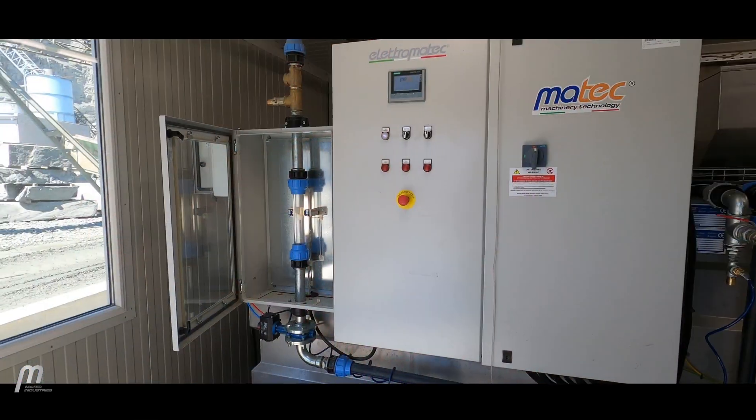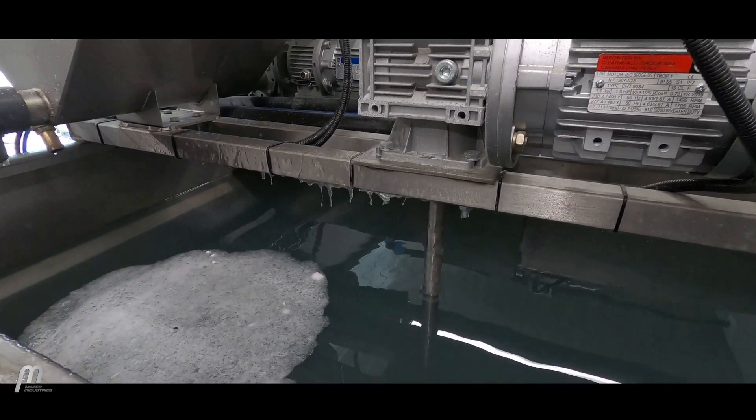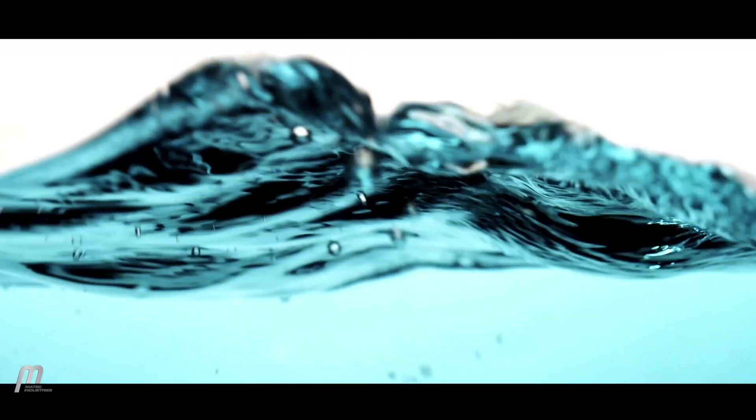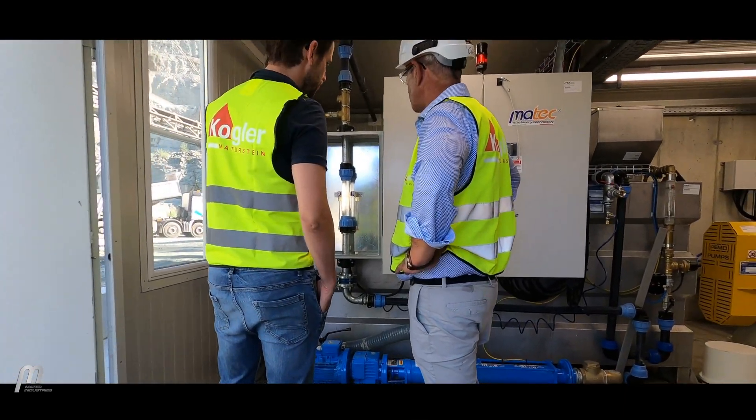A carefully controlled dose of polyelectrolyte, also referred to as flocculent, is introduced to the slurry en route to the thickener. This causes suspended particles to quickly agglomerate, increasing their mass and causing rapid settlement of the solids.